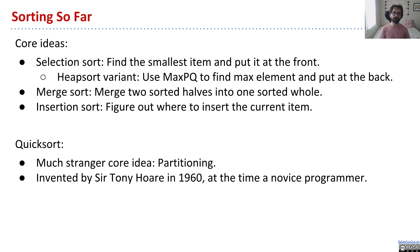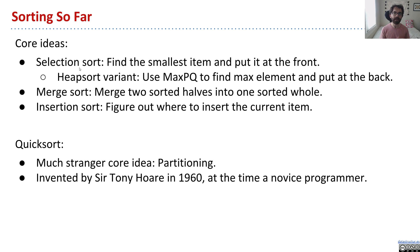Quicksort is my personal favorite sort because it has a bunch of really interesting features. One, it is in practice the fastest sort in most circumstances. Two, it uses a bunch of strange ideas to get this performance — it's a surprising idea. In some ways it's less elegant than the other sorts, but it works better. So it's messy, but beautiful. And finally, the backstory of how Quicksort came to exist is actually really interesting, so we'll talk about that a little.